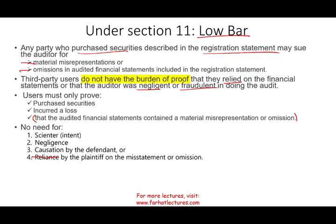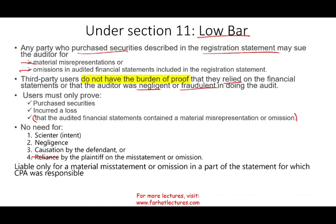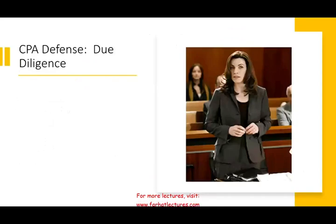One benefit for the auditor under the 1933 Act: you are only liable for the material misstatement in the part of the financial statements for which you are responsible. If two auditors divided the work — say one audited the statement of cash flows and the other the balance sheet and income statement — your liability is limited to your portion.